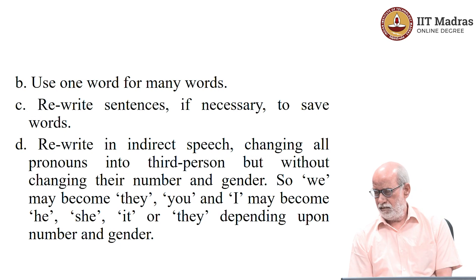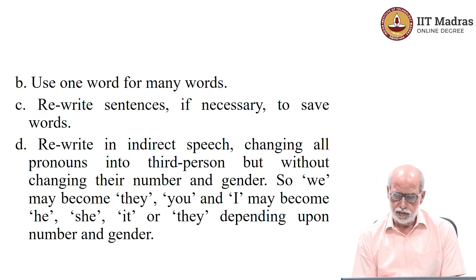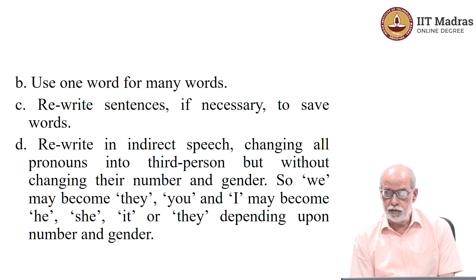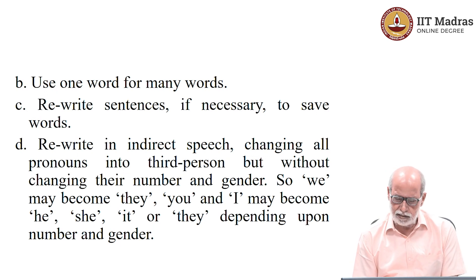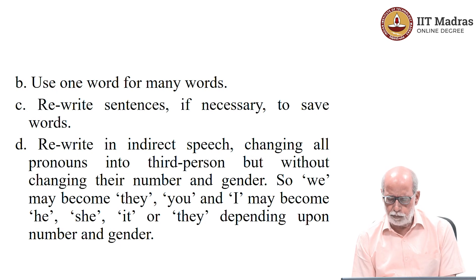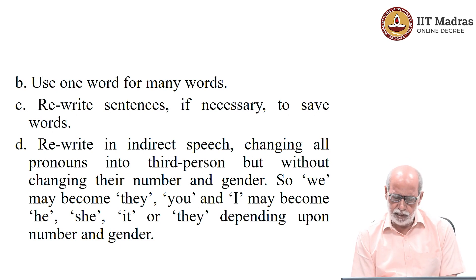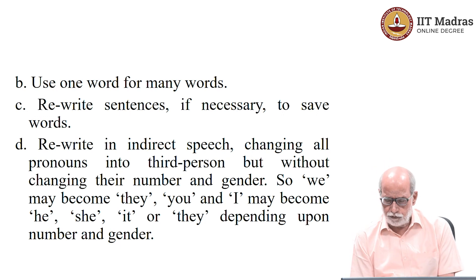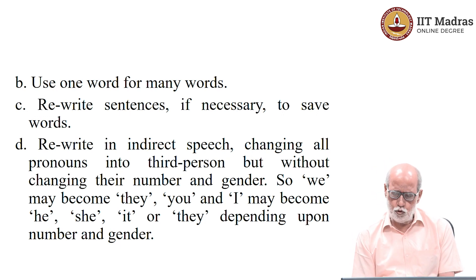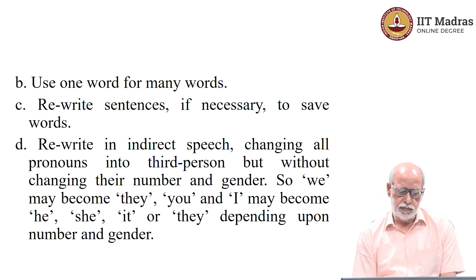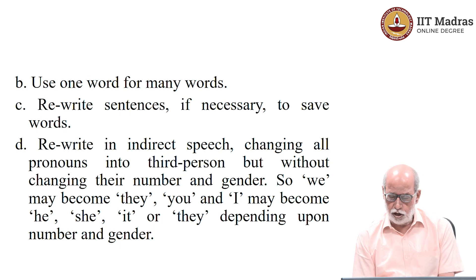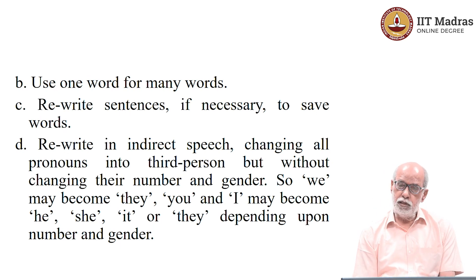Then, rewrite in indirect speech, changing all pronouns into third person, seeking tense agreement, etc. Everything has to come into third person — not first, not second — except that you cannot change the gender and the number. So, for example, 'we' can become 'they'; 'you and I' can become 'he', 'she', or 'it', or 'they', depending upon number and gender.